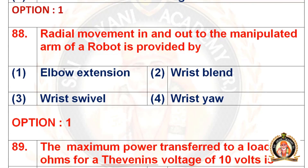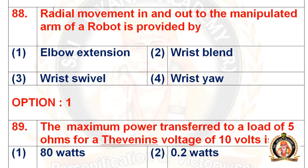Move on to the 88th question: the radial movement in and out of the manipulated arm of a robot is provided by dash. Options: elbow extension, wrist bend, wrist swivel, and wrist air. The right option is the first option — elbow extension.